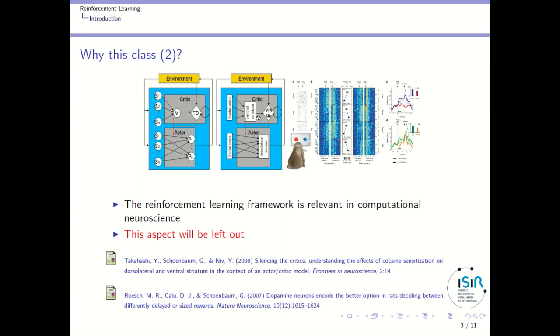You will see what an actor critic architecture is later on and there are also some recordings in the brain of some quantities such as dopamine emitted by dopaminergic neurons which seem to correspond to values that would be computed by reinforcement learning algorithms. So there is a lot of literature about this relationship. Here you just have two examples but there are many such papers which connect together computational neuroscience and reinforcement learning.